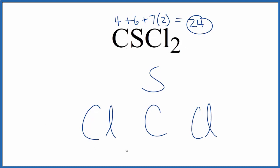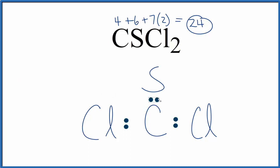So we're going to distribute those 24 electrons around these atoms. We'll start by putting a pair of electrons between atoms — that's going to form the chemical bond. So we've used six valence electrons so far.